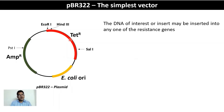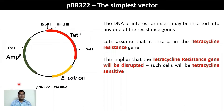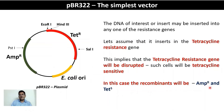Assuming insertion happens within the tetracycline resistance gene: cells that undergo successful recombinant transformation — where the insert is placed into the tetracycline resistance gene and the plasmid has transformed into the host cell — would be susceptible to tetracycline but ampicillin resistant, since the ampicillin resistance gene remains intact. These cells are the recombinant transformants.